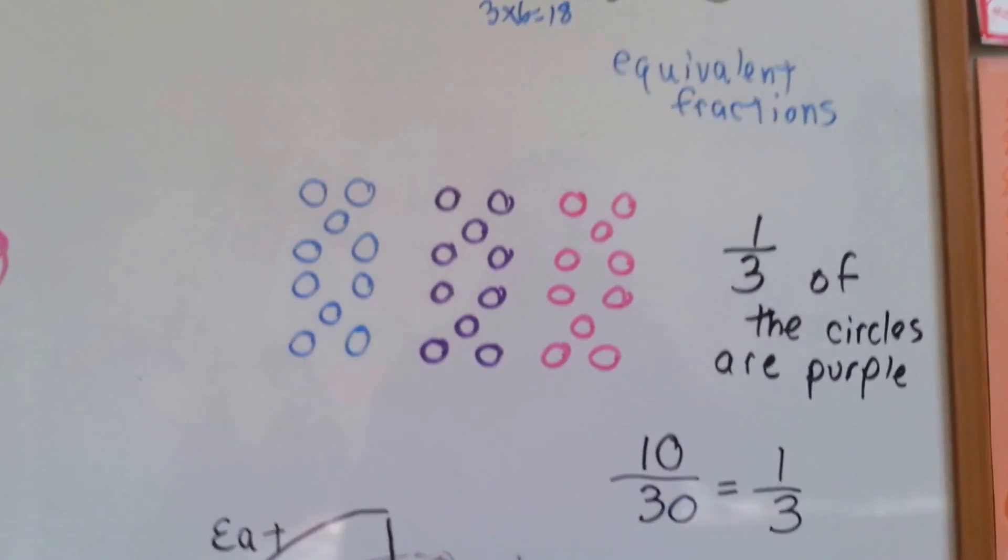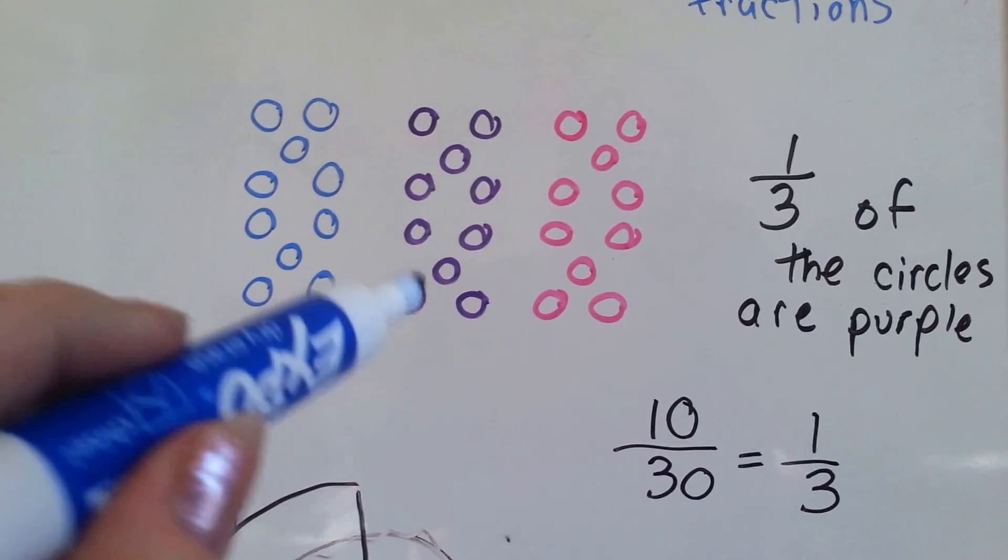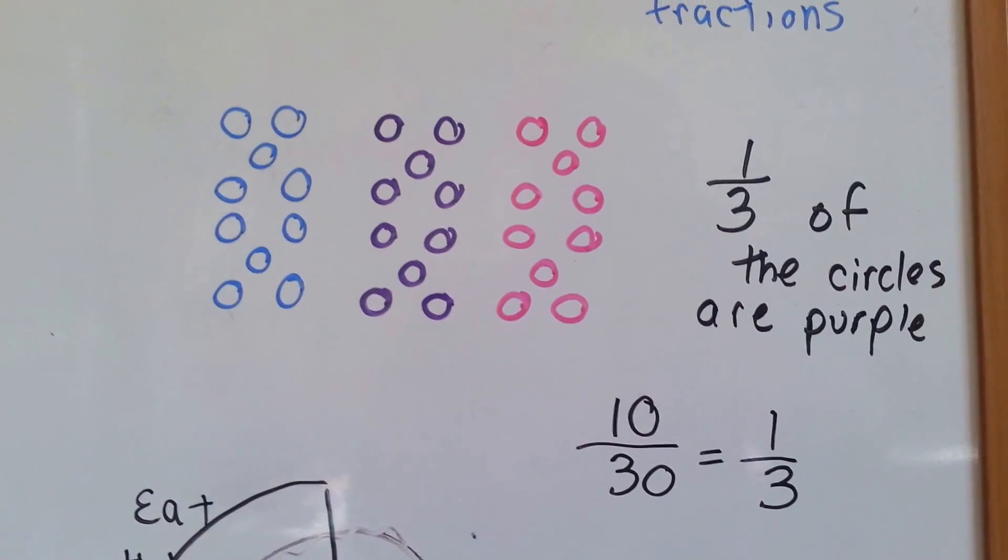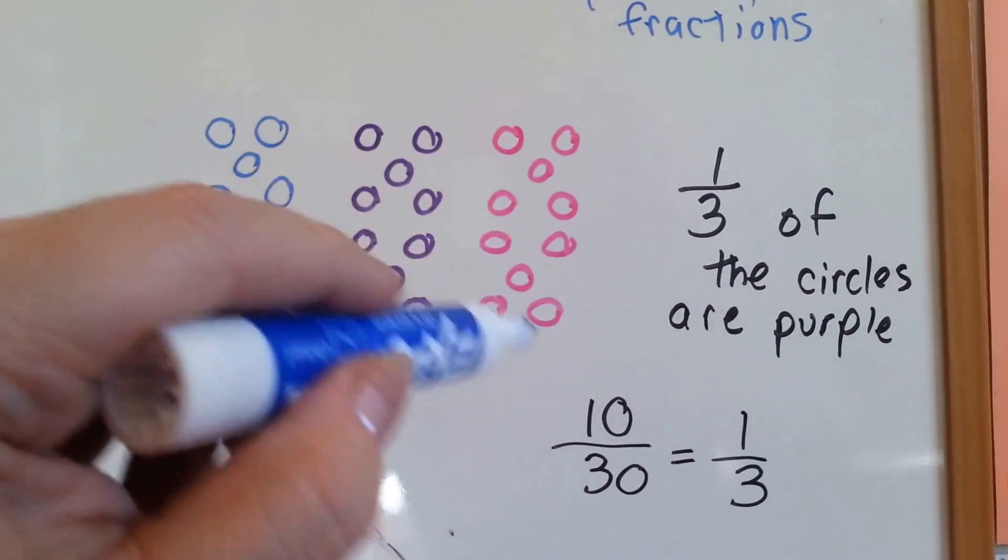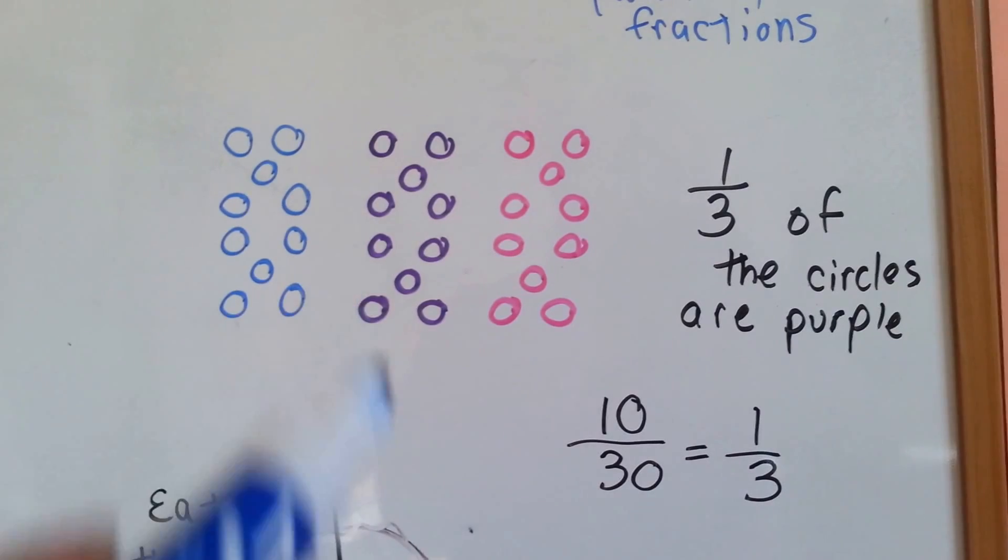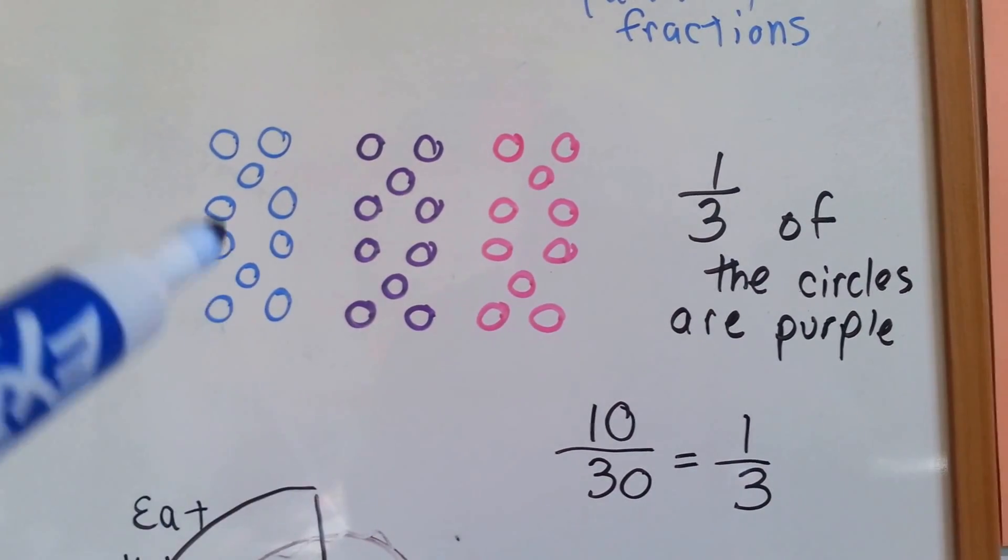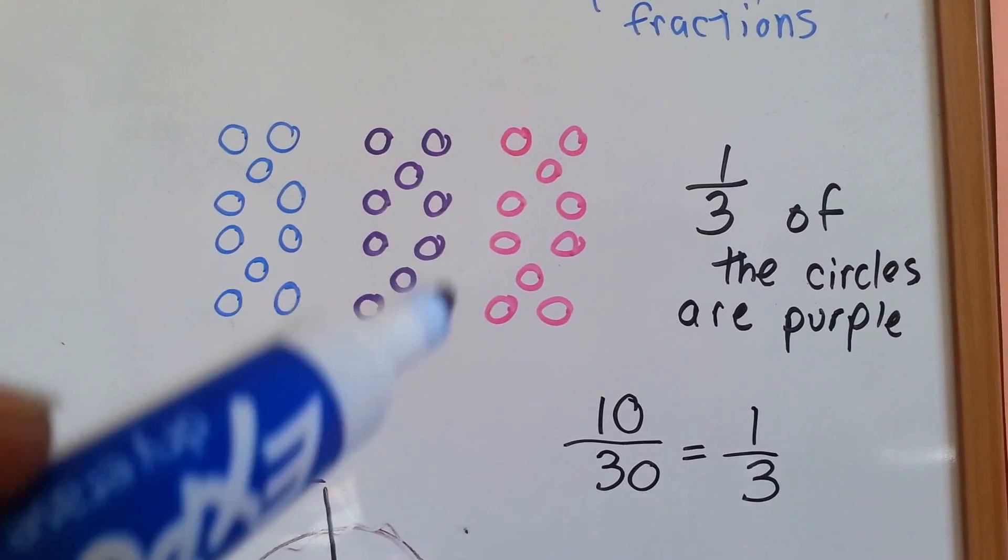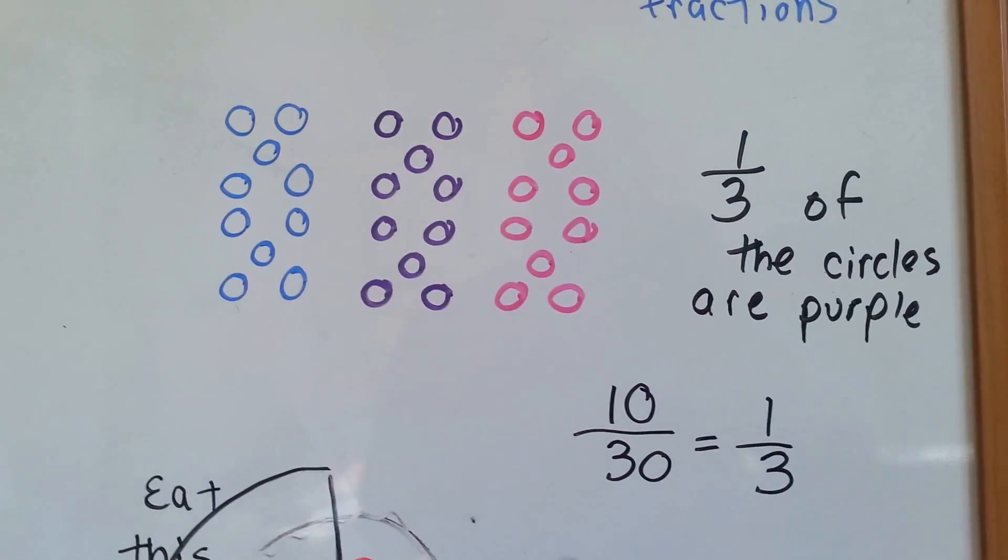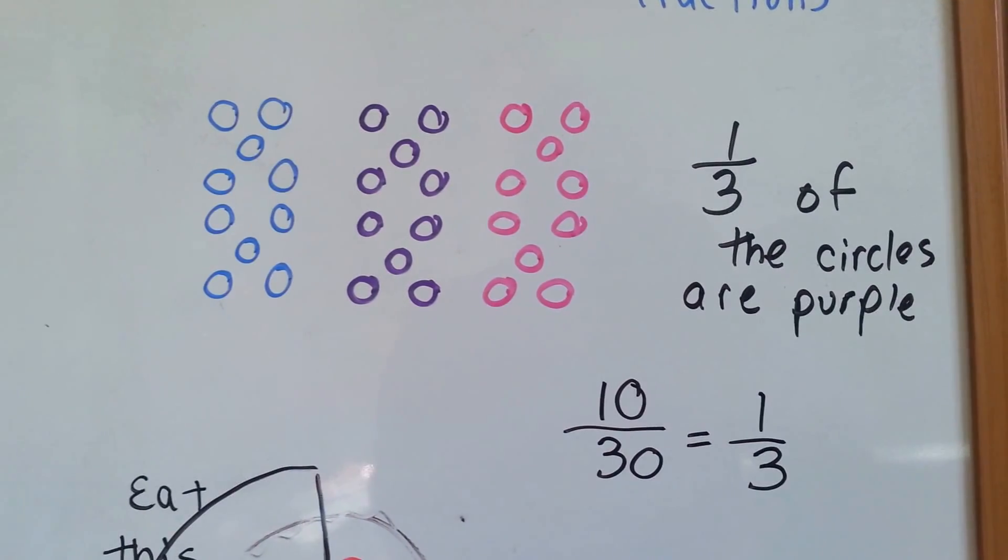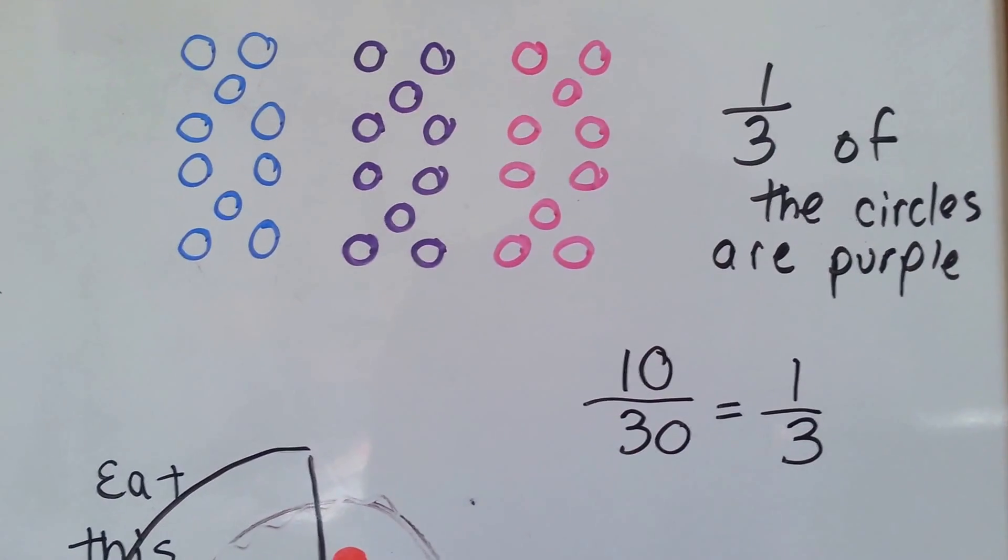Let's look at this one. Now we have ten blue circles, ten purple circles, and ten pink circles. We have a group of blue, a group of purple, and a group of pink. One-third of these circles are purple. This middle group. And there's ten in each group. Five, ten. So ten of these thirty are purple. Which means one-third is purple.